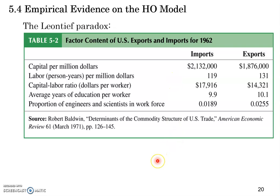Let's check out the empirical evidence for the Heckscher-Ohlin model. The first piece of empirical evidence is the so-called Leontief Paradox.